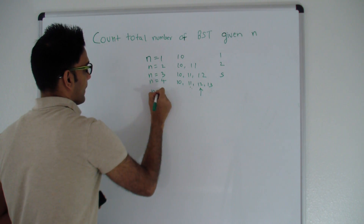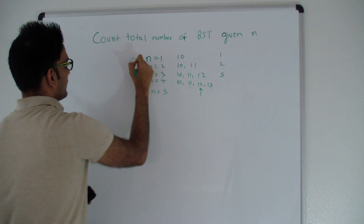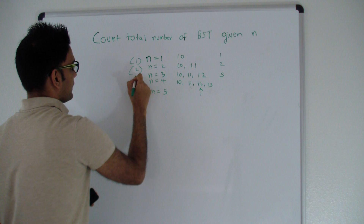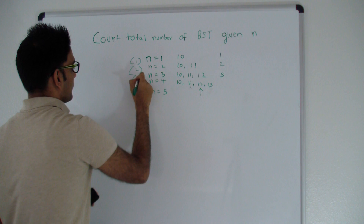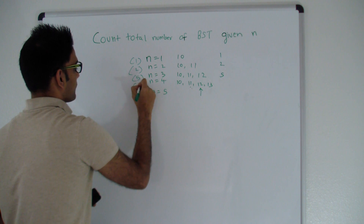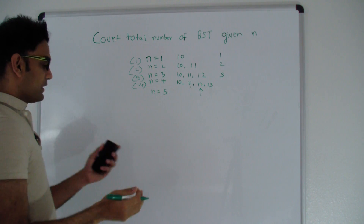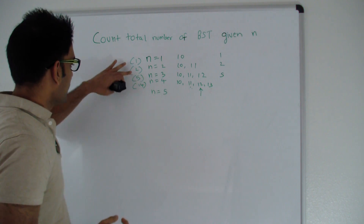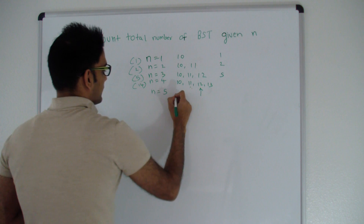Let's build up a table: when n=1, total trees = 1; when n=2, total = 2; when n=3, total = 5; when n=4, total = 14. Now let's calculate for n=5 using the same logic.